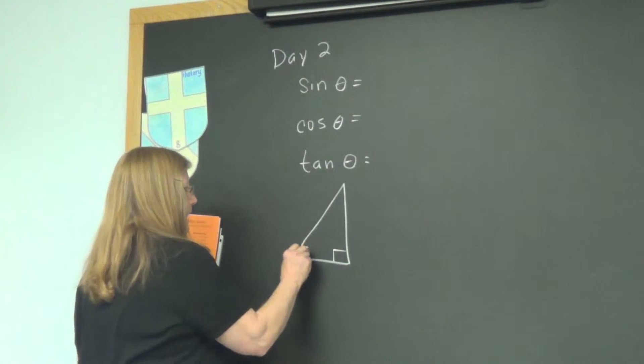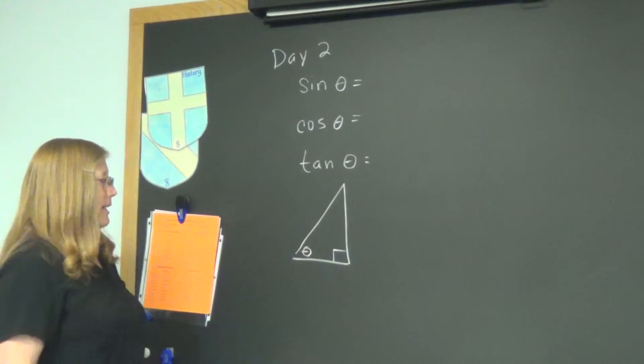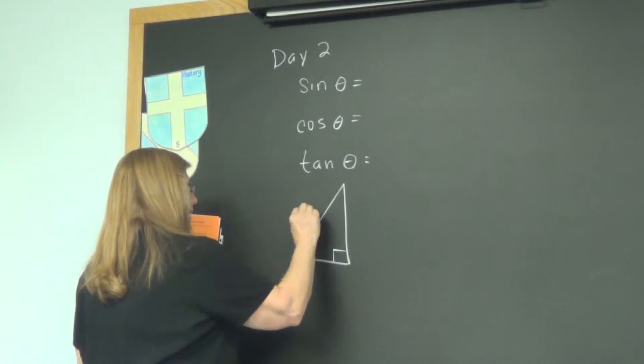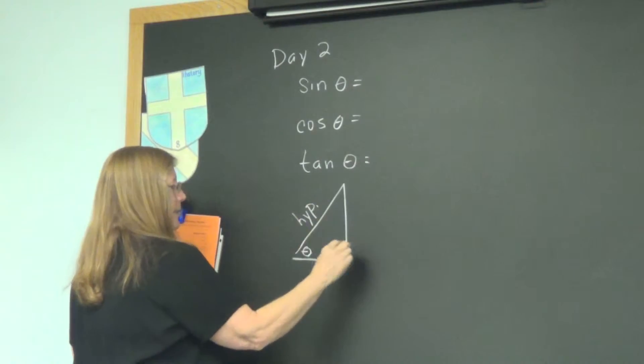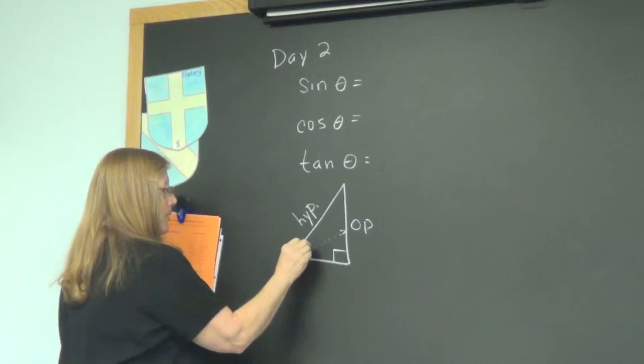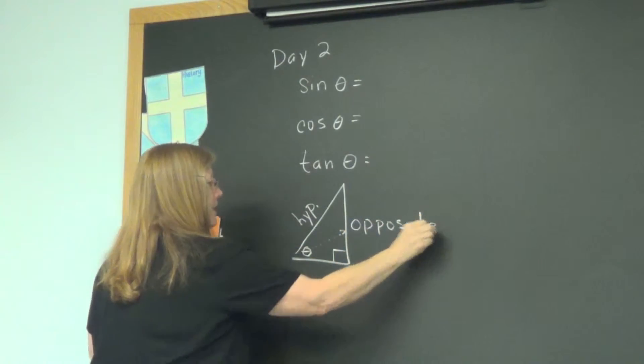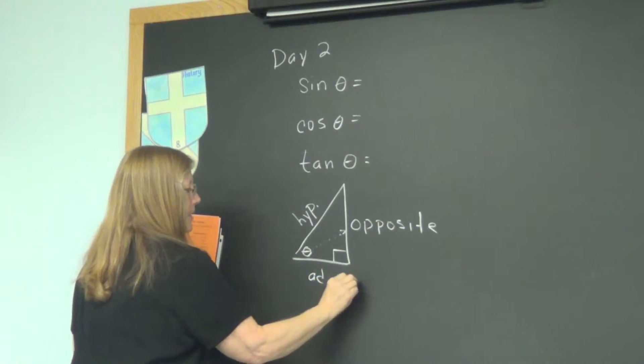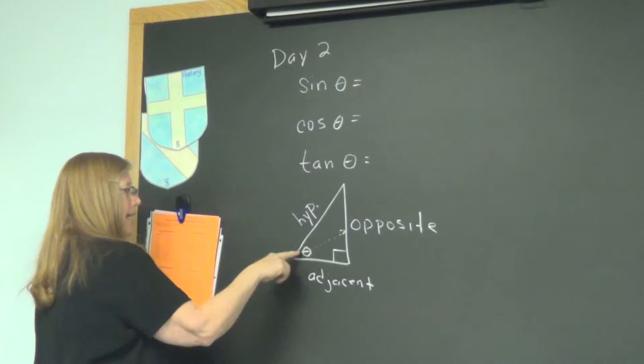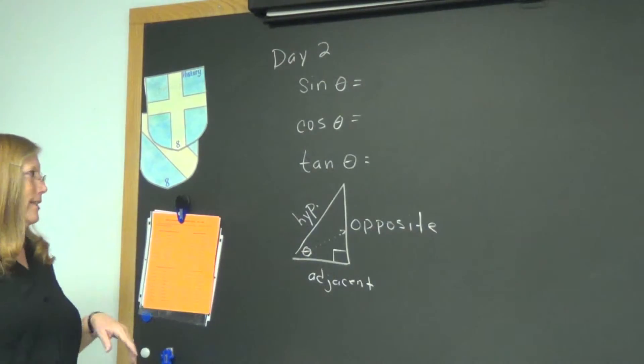So, we have an angle, and we will identify three sides of it by these names. This is the hypotenuse. This is side opposite because it is opposite the angle, theta. And this is side adjacent because it is next to the angle. So, from those, can you remind me, Zach, what is sine?